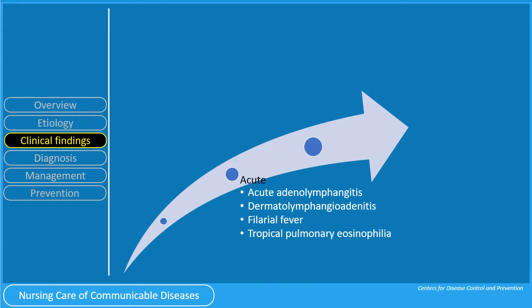Acute manifestations include acute adenolymphangitis, dermatolymphangioadenitis, filarial fever, or tropical pulmonary eosinophilia.